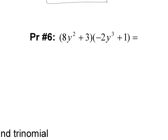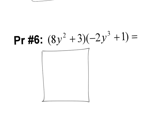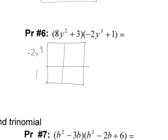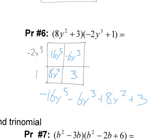Go ahead and try this one on your own — I'll help you make the box. Fill out the box and find the answer. Either binomial can go on top or the side; it doesn't matter, just as long as you have one on top and one on the side. This one is a little bit unique because we didn't have like terms in both diagonals, so we got different degrees on all our terms. That's okay — it just means we don't have any like terms to add together. Write it with the highest degree first: negative 16Y to the 5th minus 6Y to the 3rd plus 8Y squared plus 3.